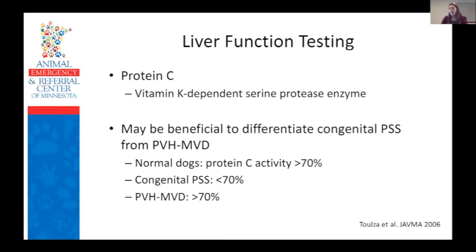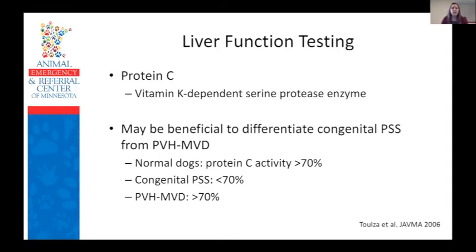Protein C is a vitamin K-dependent serine protease enzyme synthesized in the liver. In dogs, protein C may be useful for distinguishing congenital portosystemic shunts from PVH-MVD. In normal dogs, protein C activity is 70% or greater. In 88% of dogs with shunts, the protein C level is below 70%, and in 95% of dogs with PVH-MVD, the protein C level is 70% or above. Because protein C does not differentiate normal dogs from PVH-MVD, it cannot be used as a sole discriminatory test, but it is useful to differentiate a congenital shunt from microvascular dysplasia. Following surgery, dogs have been shown to have post-op improvement in protein C activity, so serial evaluation may be useful for detecting improved liver function after shunt attenuation.